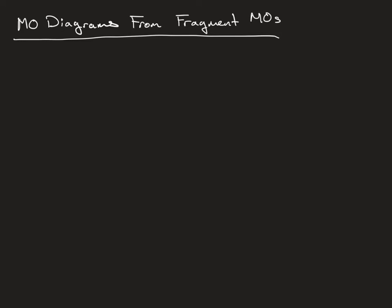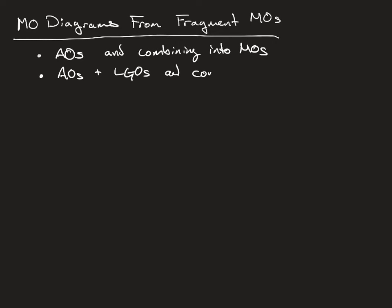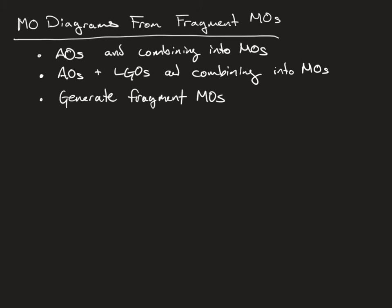Up to now, we've been constructing molecular orbital diagrams in two ways. We've either been taking atomic orbitals from two atoms and combining them, or we've been taking atomic orbitals plus ligand group orbitals and combining them into MOs. In this video, what we're going to do is generate so-called fragment molecular orbitals using the two above methods, and then combine those together into molecular orbitals for the molecule as a whole.